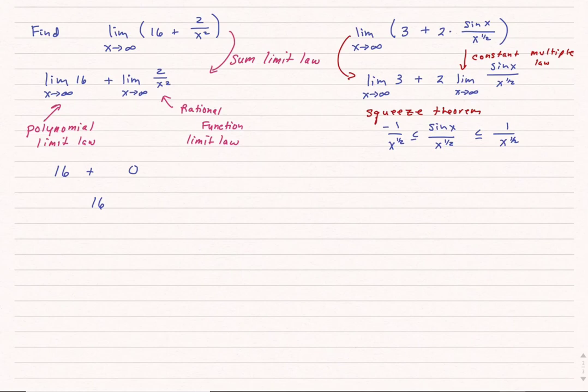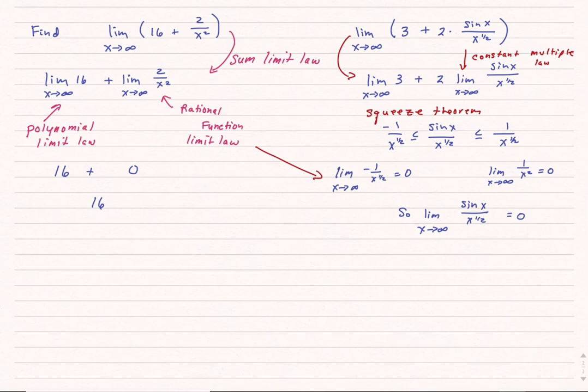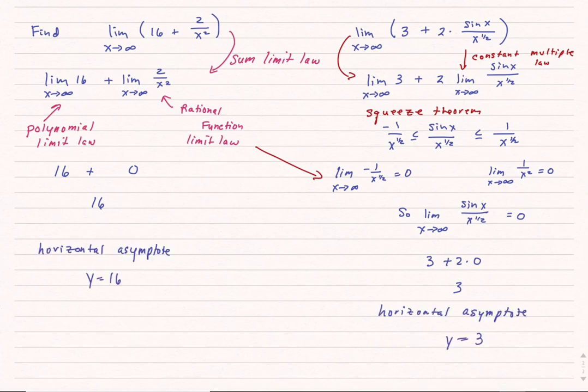Now I look at the limits of those outer bounds. The limit as x approaches infinity of negative 1 over square root of x equals zero by the rational function limit law, and the same for the upper limit. Since sine x over square root of x is sandwiched between them, its limit is also zero. Therefore, my final answer for this second example is simply 3.